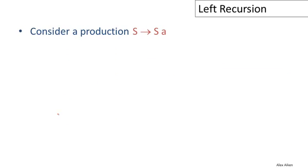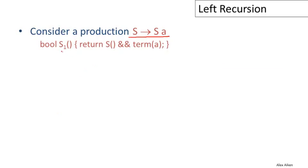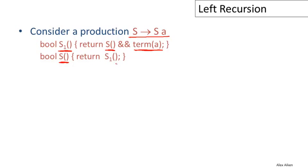Let's consider a very simple grammar that consists of only one production: S goes to S followed by A. The recursive descent algorithm for this production has a function called S1 for the first production of S. It's going to succeed if the function S succeeds, and then we see a terminal A in the input stream. Since there's only one alternative, we don't need to worry about backtracking, so S will succeed exactly when S1 succeeds.